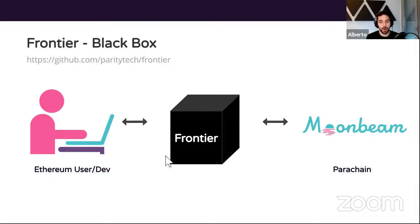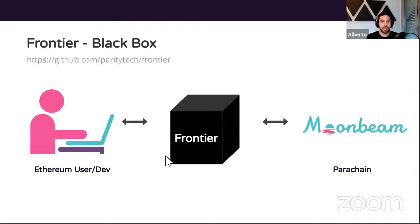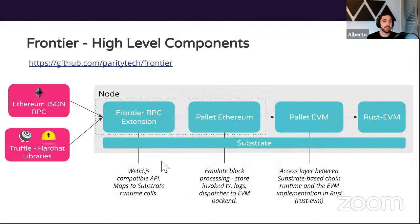In Moonbeam, we introduce a concept called Frontier — a project by Parity that we've worked closely with. Frontier brings Ethereum compatibility features to a substrate-based chain. Substrate is the framework used to build Moonbeam, also built by Parity, which lets you build blockchains. I like to explain Frontier like a black box — it's a translator that does the magic for you. You don't have to worry about working with a different technology stack; it will feel just like Ethereum, with Frontier doing the heavy lifting in the middle.